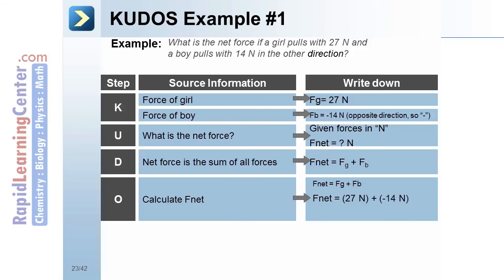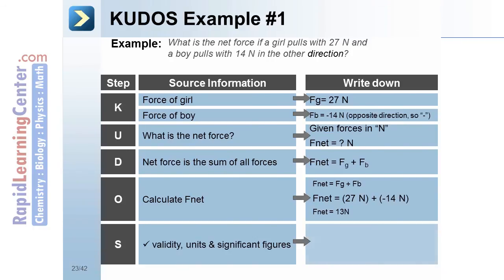Calculating for this example is a simple matter of taking 27 newtons and subtracting 14 newtons. Our substantiation. We can check that it's a reasonable answer with a correct unit and the correct number of significant figures.